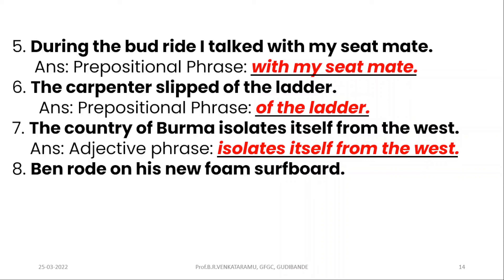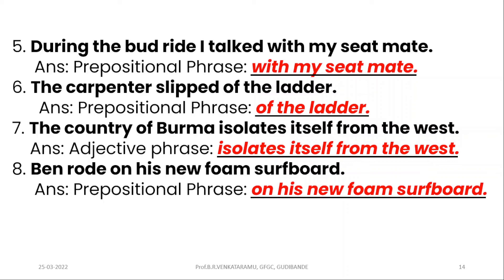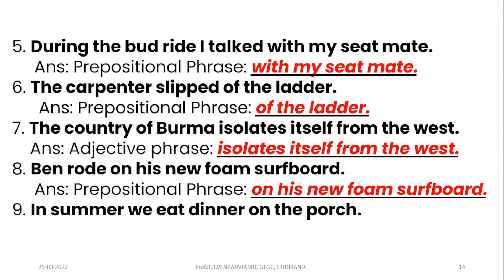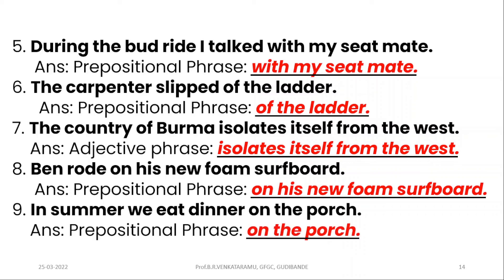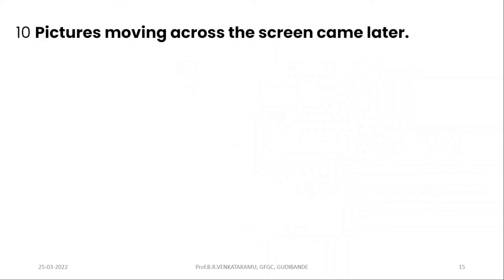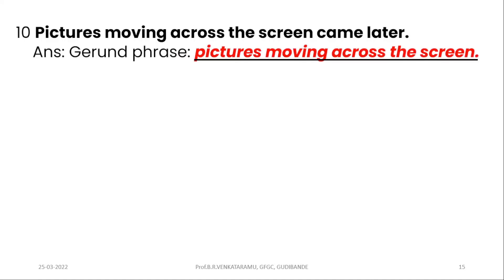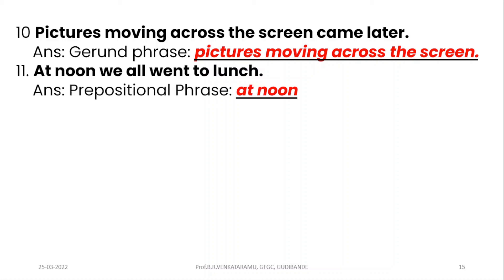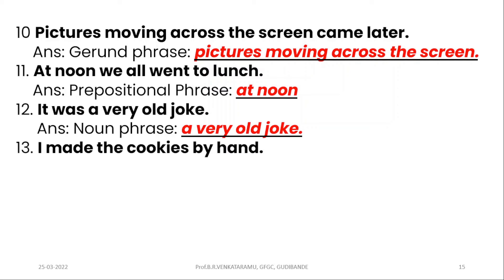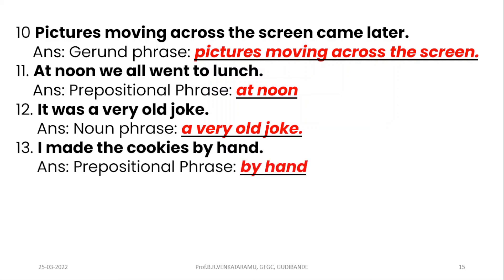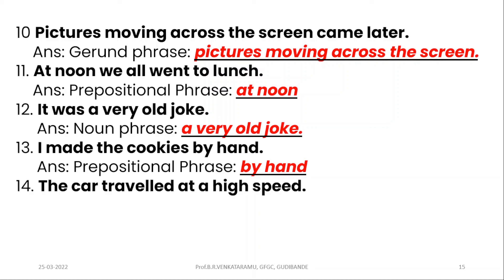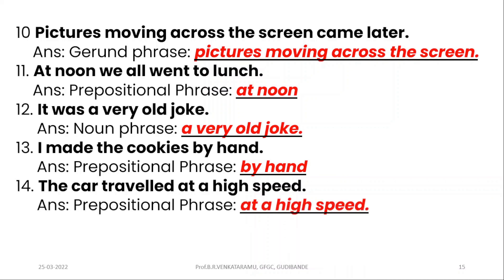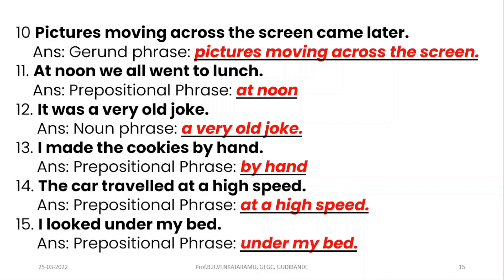Eighth: 'Ben rode on his new foam surfboard' — 'on his new foam surfboard' is the prepositional phrase. Ninth: 'In summer, we eat dinner on the porch' — 'on the porch' is the prepositional phrase. Tenth: 'Pictures moving across the screen came later' — 'pictures moving across the screen' is the gerund phrase. Eleventh: 'At noon, we all went to lunch' — 'at noon' is the prepositional phrase. Twelfth: 'It was a very old joke' — 'a very old joke' is a noun phrase. Thirteenth: 'I made the cookies by hand' — 'by hand' is the prepositional phrase. Fourteenth: 'The car travelled at a high speed' — 'at a high speed' is the prepositional phrase. Fifteenth: 'I looked under my bed' — 'under my bed' is the prepositional phrase.